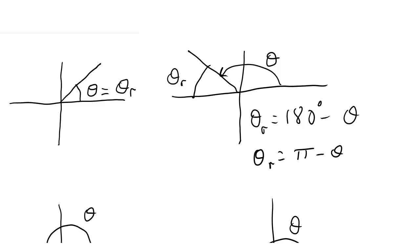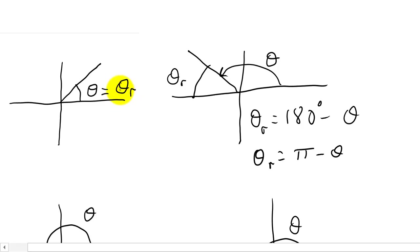The reference angle is an angle between 0 and 90 degrees. Looking at this diagram, if your angle theta is in the first quadrant, that is equal to your reference angle. Your reference angle is an angle in the first quadrant, so if the angle is in the first quadrant then that's equal to your reference angle.